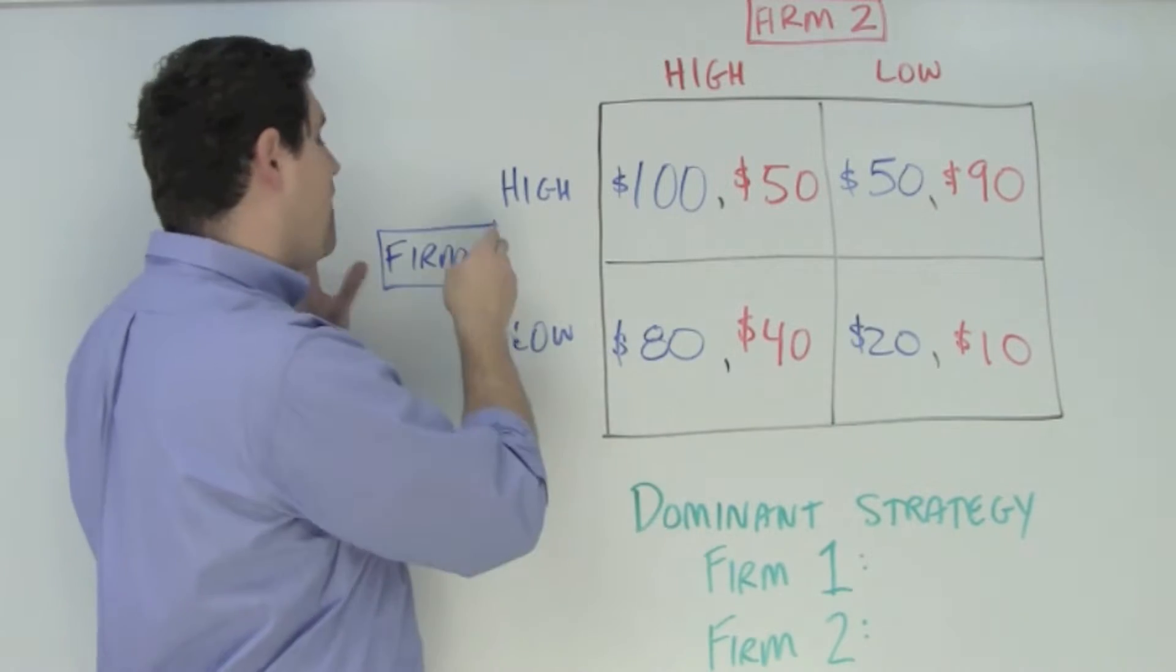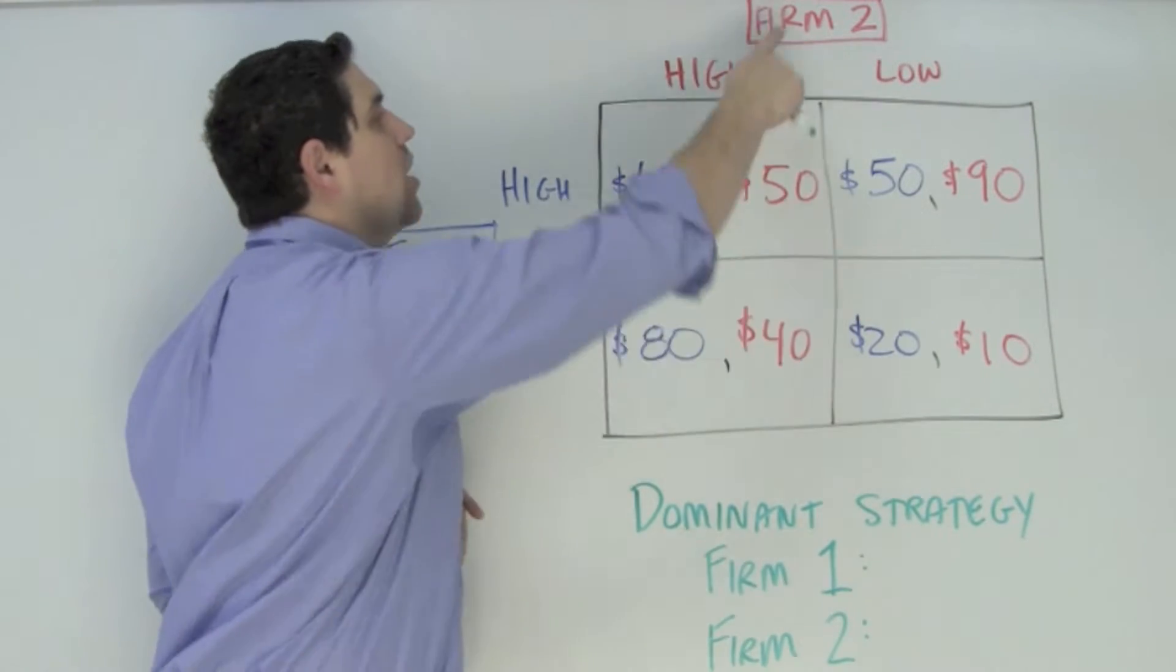The numbers on the left, the blue numbers, are for the firm on the left, and the numbers on the right, the red ones, are for the firm on the top.